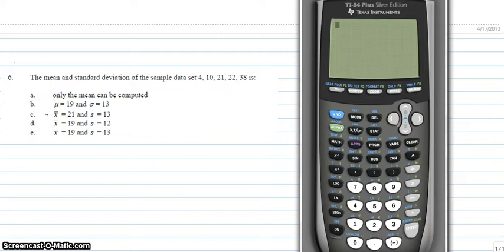C. X-bar equals 21 and S equals 13. D. X-bar equals 19 and S equals 12. Or E. X-bar equals 19 and S equals 13.